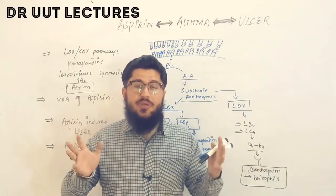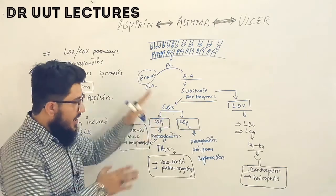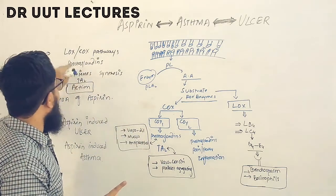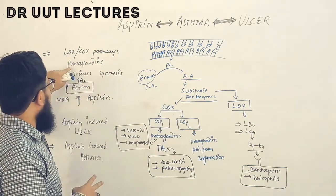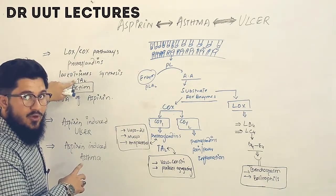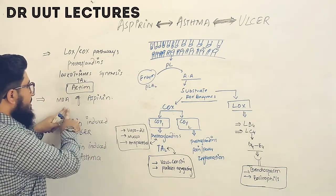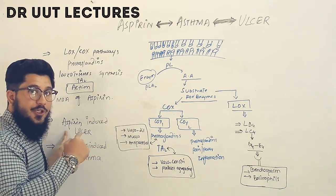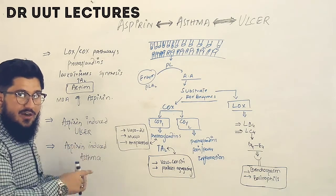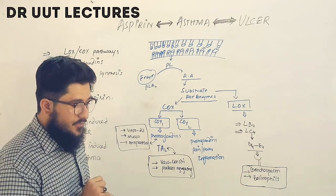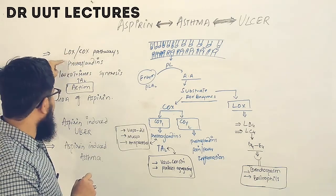In this tutorial we will discuss a number of interrelated topics, which I will explain through a single schematic diagram. The topics include: the COX and LOX pathways, meaning the cyclooxygenase and lipoxygenase pathways; the production and actions of prostaglandins, leukotrienes, and thromboxane A2; the mechanism of action of aspirin; aspirin-induced ulcer; and aspirin-induced asthma.